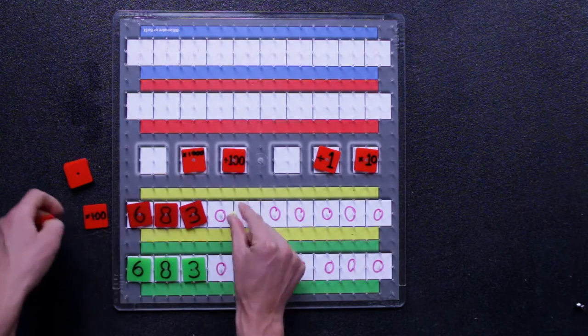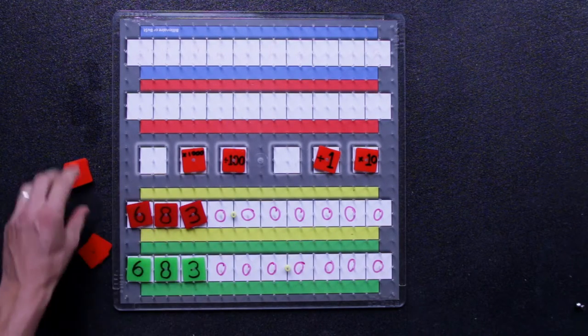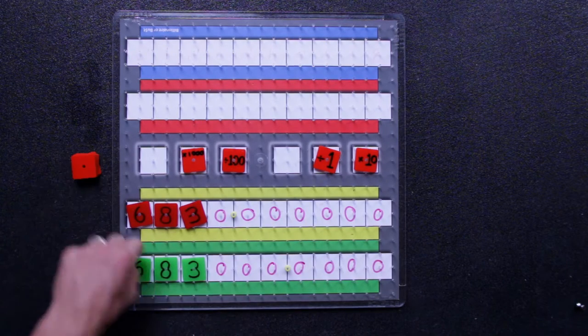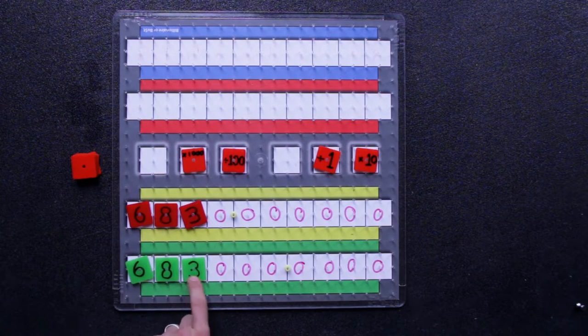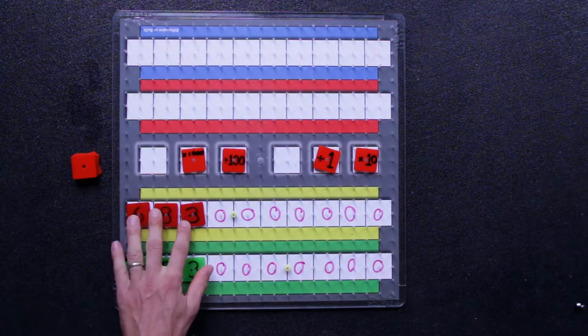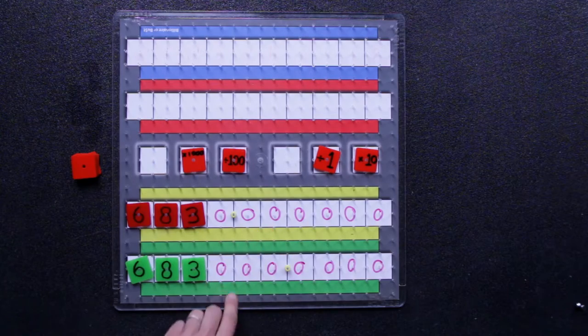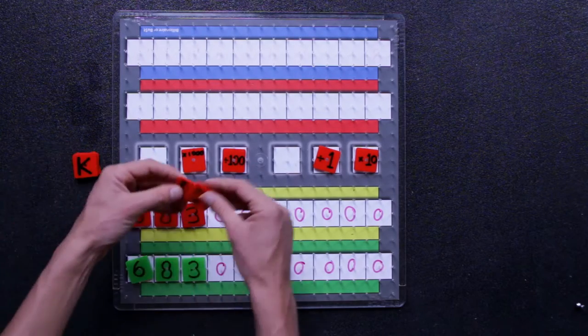But if this game continued on, let's imagine that it went out to here. Green had a really big number, red was there, and they still couldn't catch green because they just kept getting away. Now green's on 683,000 and red is on 6,830, so there's still a little ways off. Two new actions would get drawn.